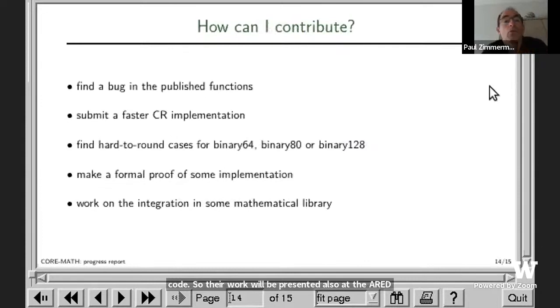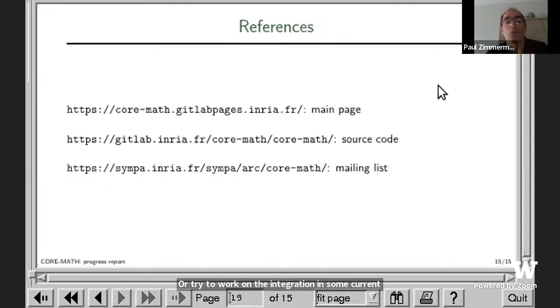You can contribute to the CORE-MATH project in different ways. You can either try to find a bug in the published functions, submit a faster implementation. Another way to contribute is to find hard-to-round cases for the different formats. You can also try to make a formal proof of some implementation—this is very welcome—or try to work on the integration in some current mathematical library. That's all I wanted to present. Thank you very much.